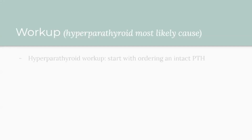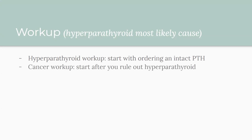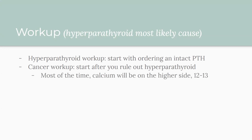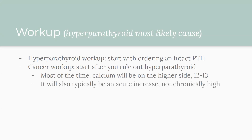We're going to start her workup because it's safe to do outpatient. Hyperparathyroidism is first since it's the most likely cause — you start by ordering an intact PTH. The cancer workup comes after you've ruled out hyperparathyroid because it's less common and the labs are more involved. Most reassuringly, when cancer is the cause, calcium tends to be quite high — like 12 or 13 — and acutely elevated rather than chronically high. People with acutely high calcium are more likely to be symptomatic than those with chronic hyperparathyroidism.